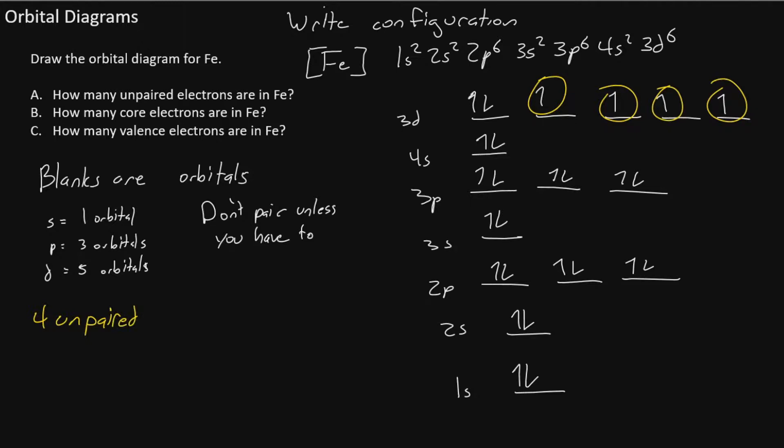Now we are asked how many core electrons there are in iron. If we check the energy levels, we see that 4s is the highest possible level because it's level four. Everything else is less than level four. Now 3d is an incomplete level. That's also considered valence. So everything in this blue box I'm drawing we'll consider valence. And everything else we'll consider core.